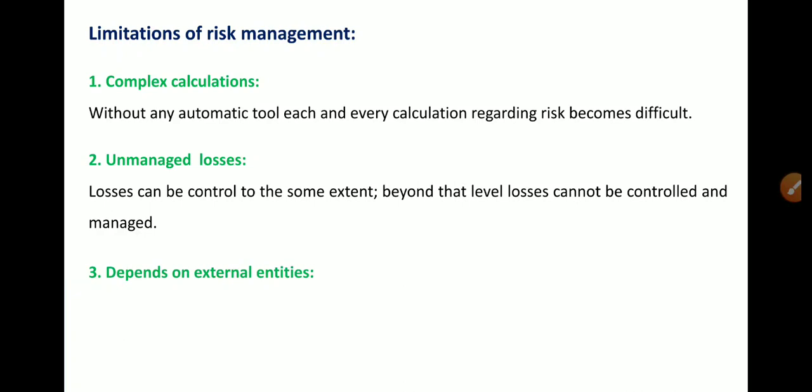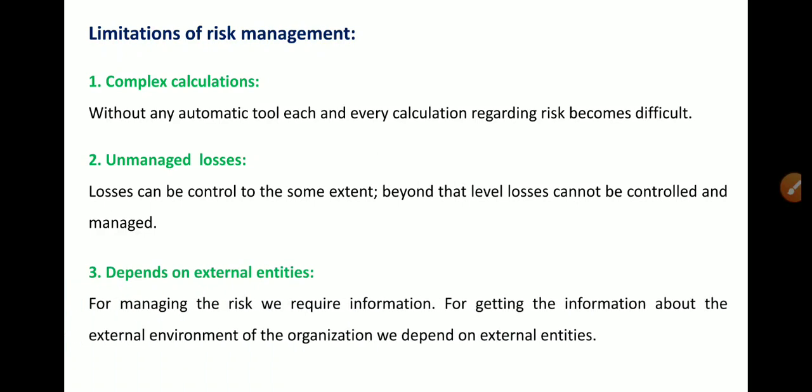The third limitation is that risk management depends on external entities — meaning external factors. For managing the risk, we require information. To get information about the external environment of the organization, we depend on external entities. For example, a company requires certain information or feedback and has to approach another organization to get that information. They must depend on external sources to manage risk. That external source of information can be mobilized through other entities, which is a limitation.